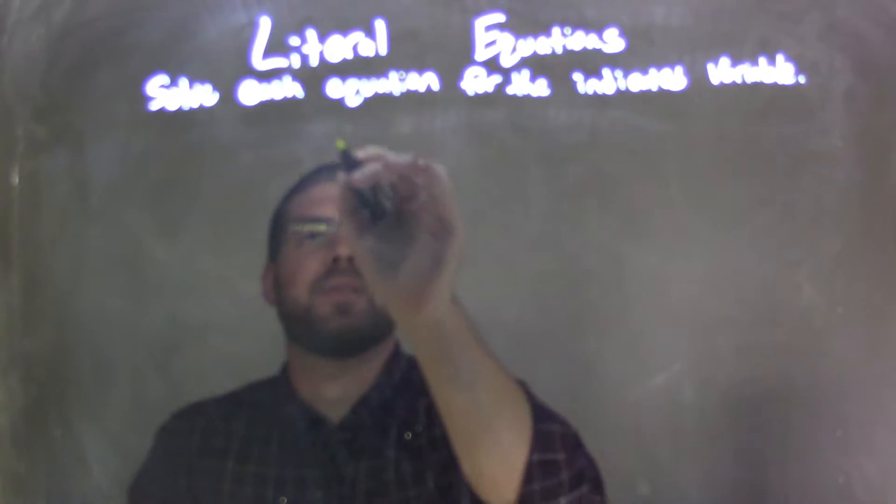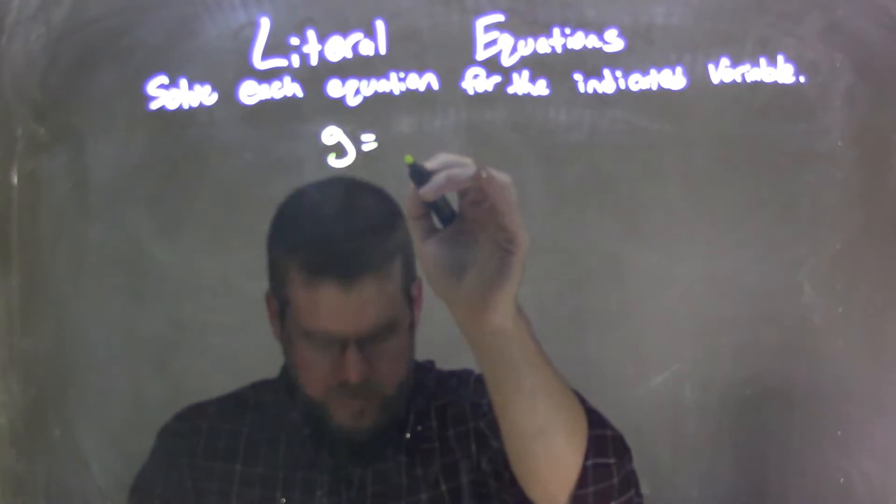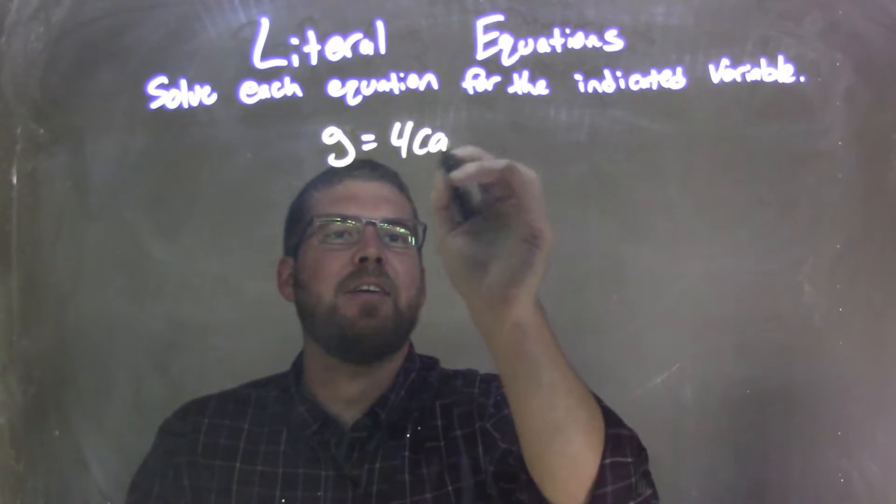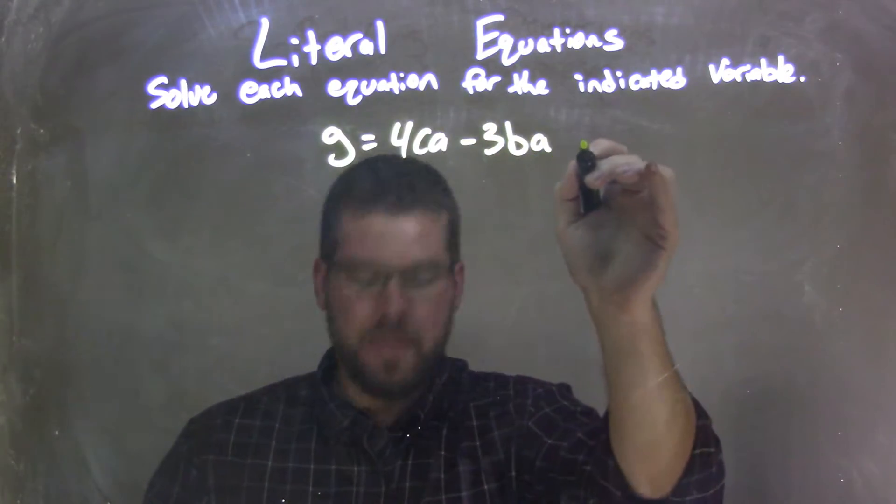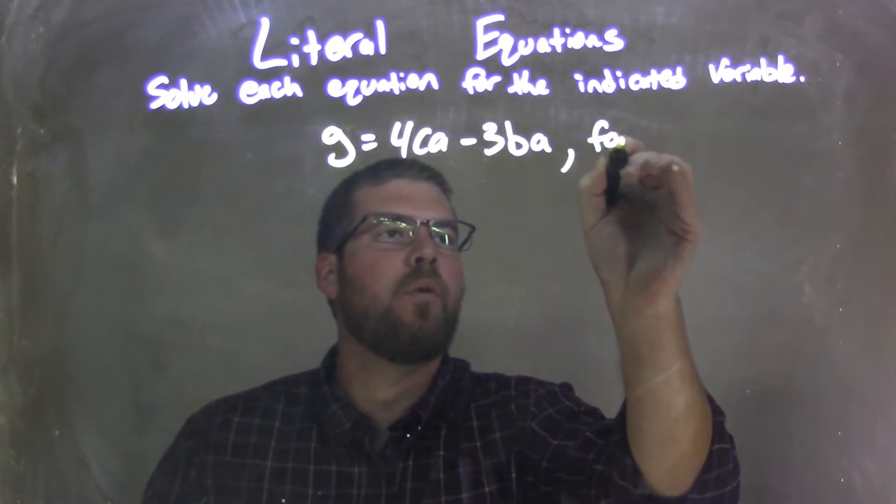So if I was given this equation, G equals 4CA, that's 4 times C times A, minus 3BA, 3 times B times A, and we're going to solve that for A.